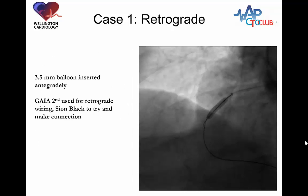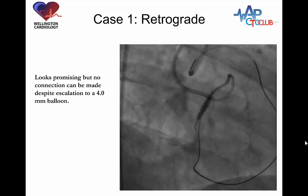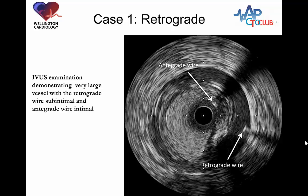We start with a 3.5mm balloon inserted antegradely, then try to make the connection with a Cyan Black. This fails, so the usual solution is to upsize the balloon. The balloon is upsized to 4.0mm — it looks promising, but again no connection can be made. With trouble performing the reverse CART despite use of the guidewire, it was time to do an IVUS-guided reverse CART. An IVUS catheter is advanced antegradely, confirming the antegrade wire is in the true lumen and the retrograde wire is in the sub-intimal space. There is a small tear in the intima and a small connection, but it would be difficult to wire.